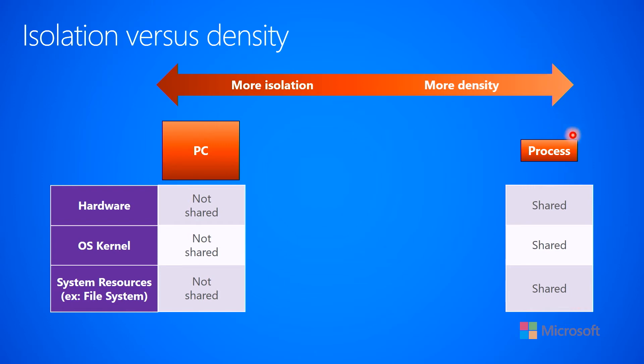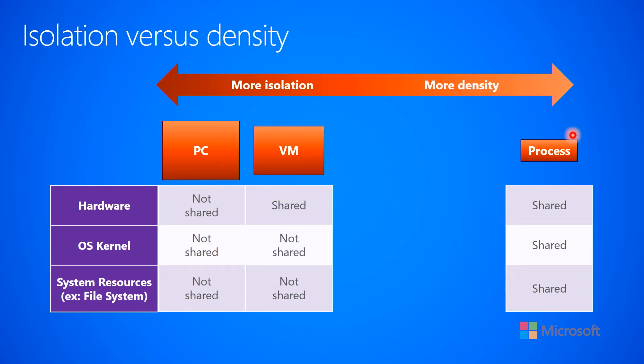So processes give us a lot — we can put many processes on a single machine — but they're not heavily isolated from one another. This is what we've had historically for many years, but we would like to tighten this gap between the two. So more recently, virtual machines were introduced, which have actually been around for many years now too.